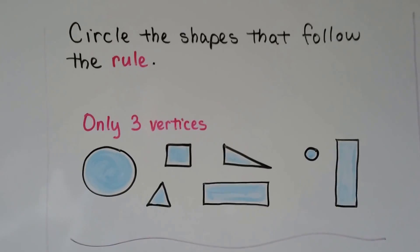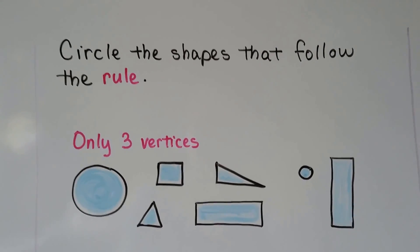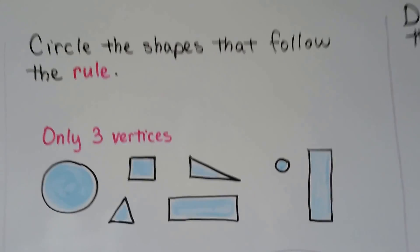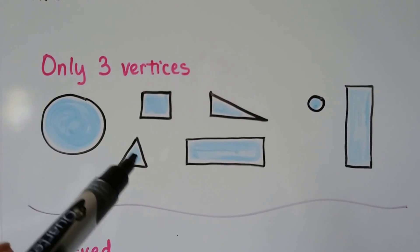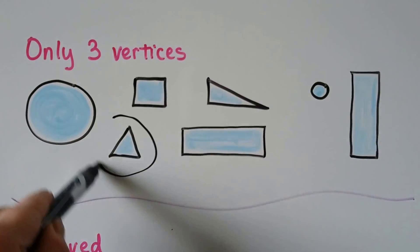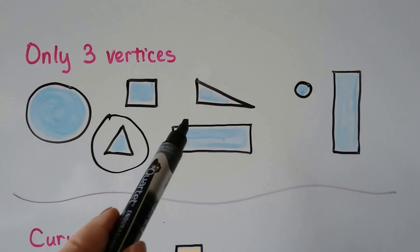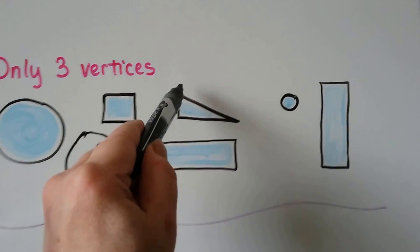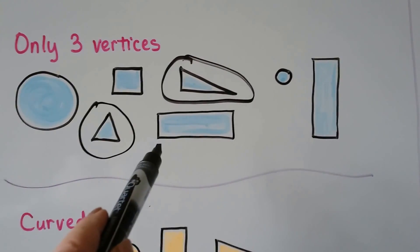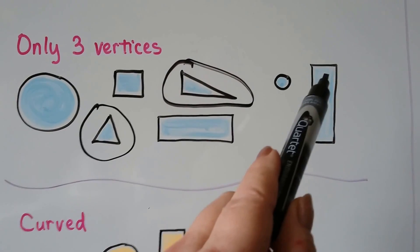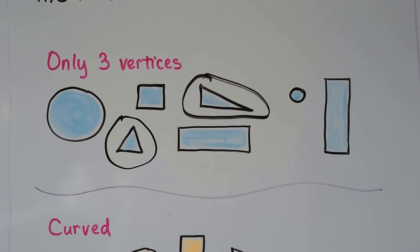Here's some more — circle the shapes that follow the rule: only three vertices, meaning only three corners. There are no corners on this one. Triangles have three corners: one, two, three — so we can circle this one. Squares have four vertices: one, two, three, four. This triangle has one, two, three — so we can circle this one. And that's a rectangle, so it has four vertices. We've circled the shapes that follow the rule.